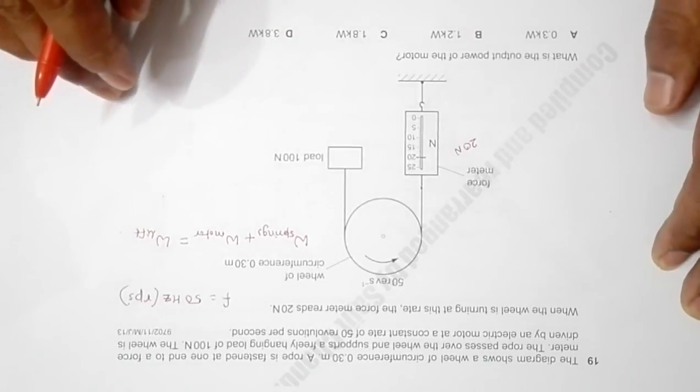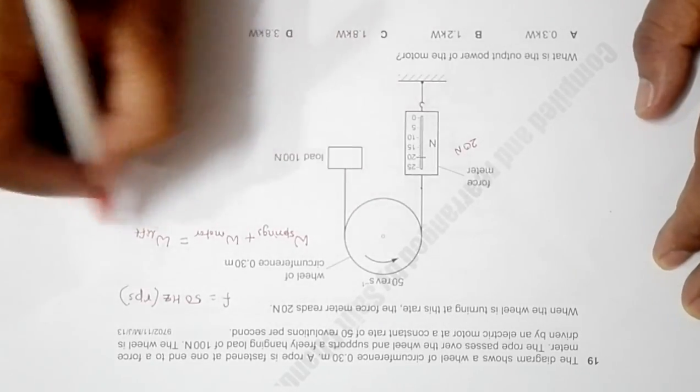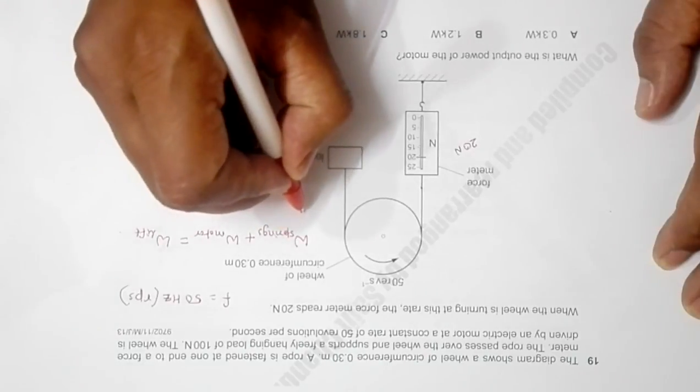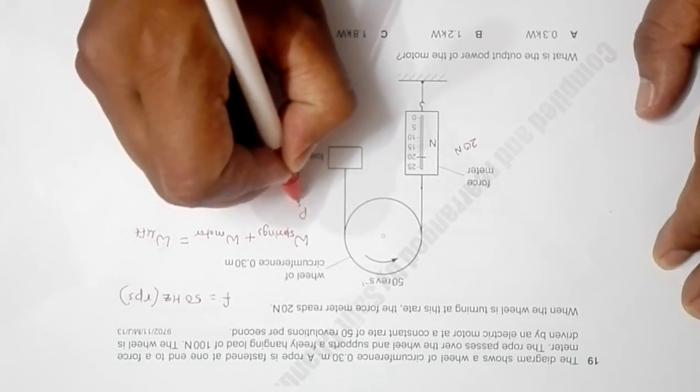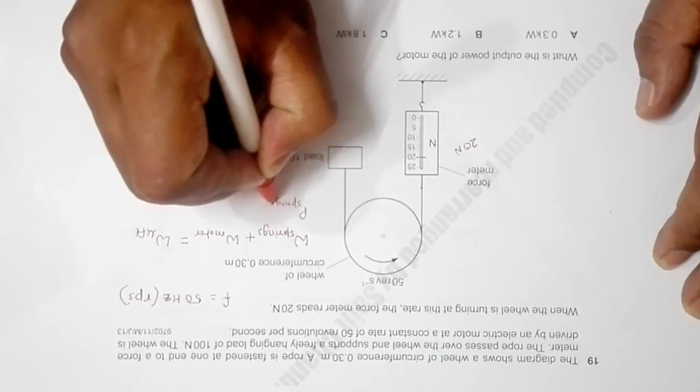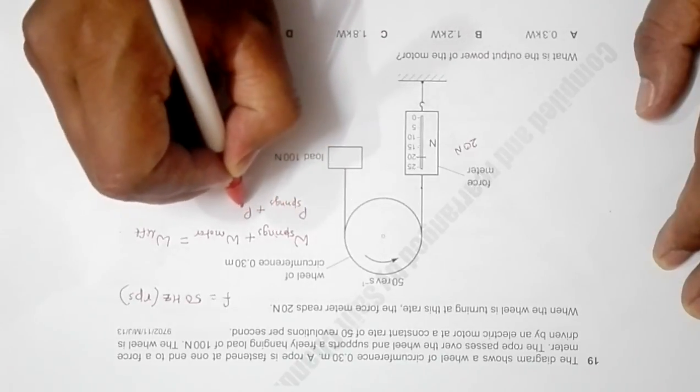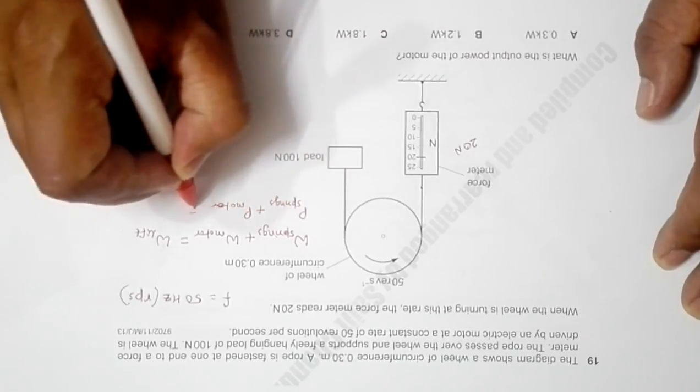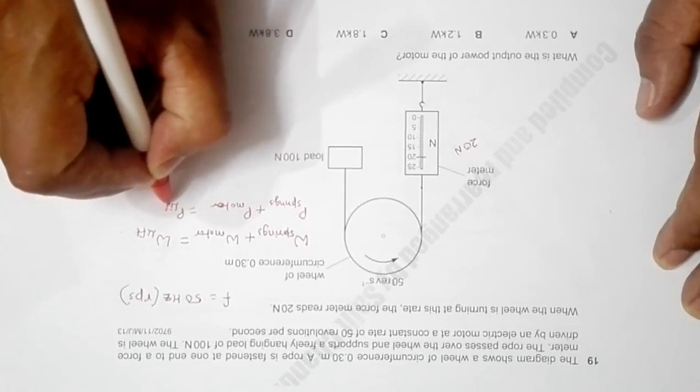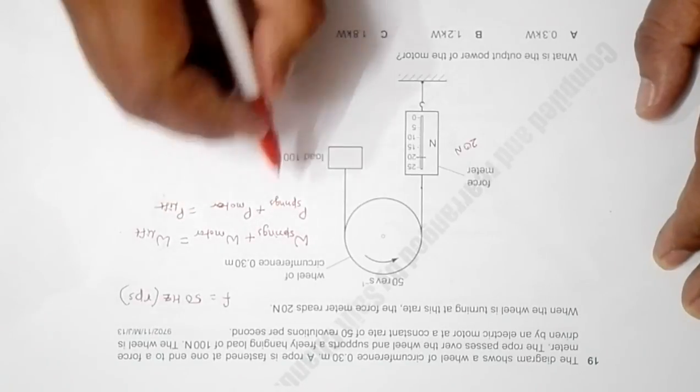That means if I divide all of them by time, I will have power of the springs plus power of the motor is equal to power needed to lift the load.